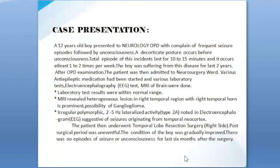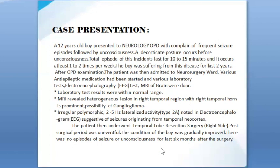Irregular polymorphic 2 to 5 Hz lateralized activity — type 2A — was noted in the electroencephalogram, suggestive of seizures originating from the temporal neocortex. The patient then underwent temporal lobe resection surgery on the right side. The post-surgical period was uneventful and the condition of the boy gradually improved. There were no episodes of seizure or unconsciousness for the six months following surgery.